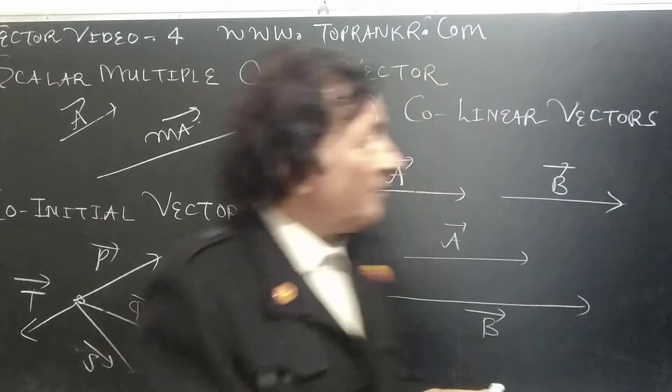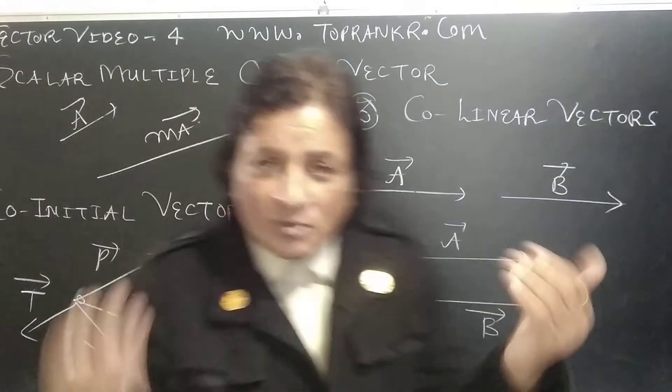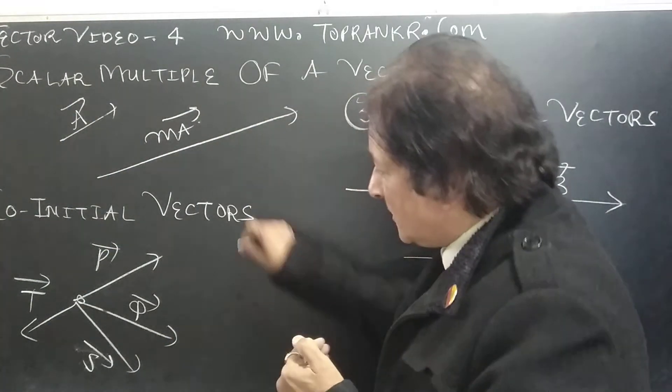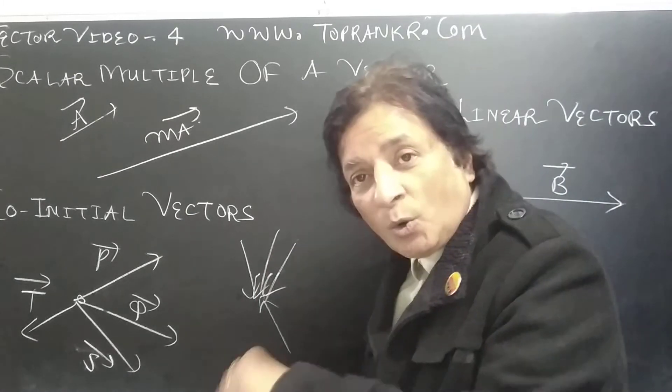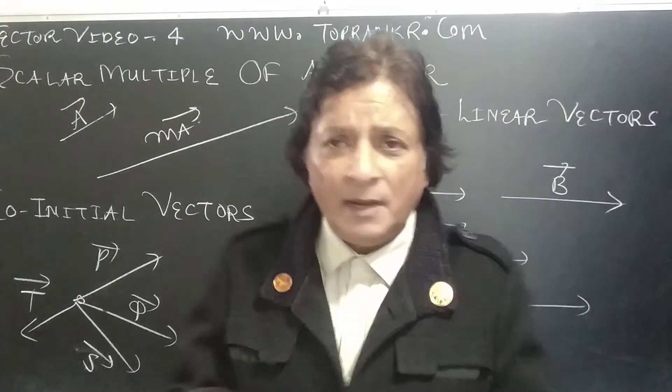And students, if number of vectors are terminated at one point, these are called co-terminous vectors. You can simply define it from the headline.